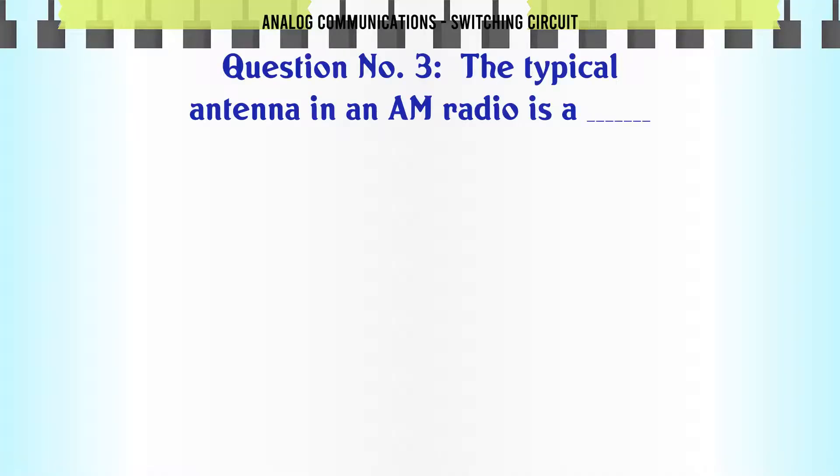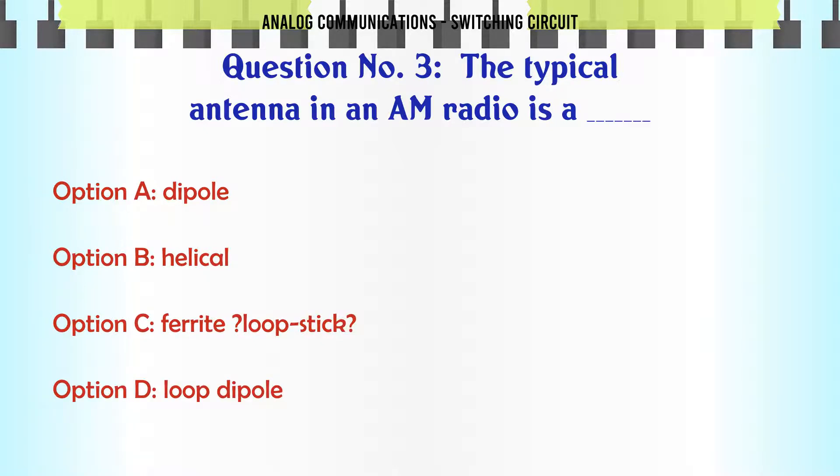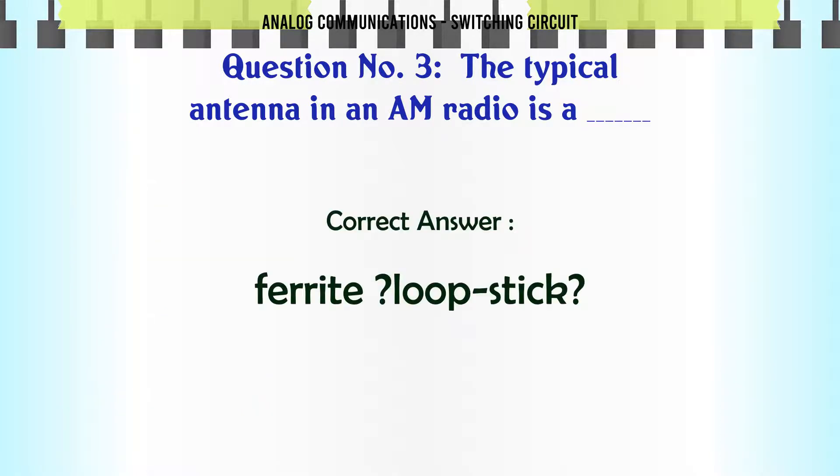Question: The typical antenna in an AM radio is. Option A: Dipole. Option B: Helical. Option C: Ferrite Loop Stick. Option D: Loop Dipole. The correct answer is Ferrite Loop Stick.